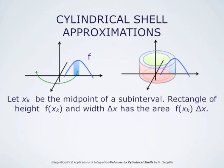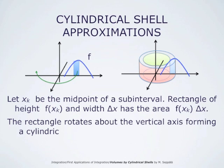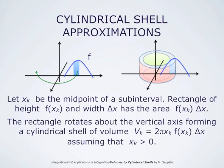Let x_k be the midpoint of a subinterval. A rectangle of height f(x_k) and width delta x has area f(x_k) times delta x. When this rectangle rotates about the vertical axis, it forms a cylindrical shell of volume V_k, which is 2 times pi times x_k times f(x_k) times delta x. Here, f(x_k) times delta x is the area of the rectangle, and 2 pi times x_k is the distance the midpoint of the base travels when the rectangle rotates about the vertical axis. This formula holds assuming x_k is positive and f(x_k) takes positive values.